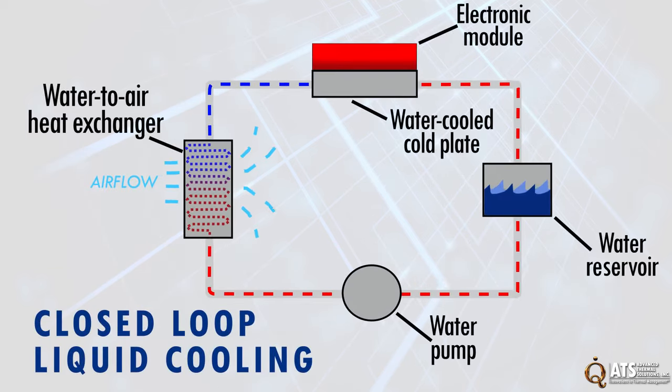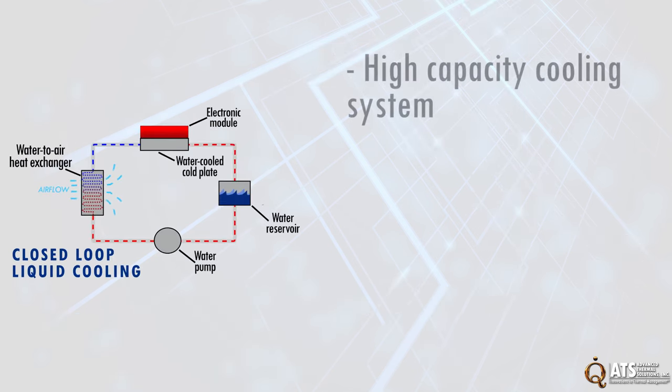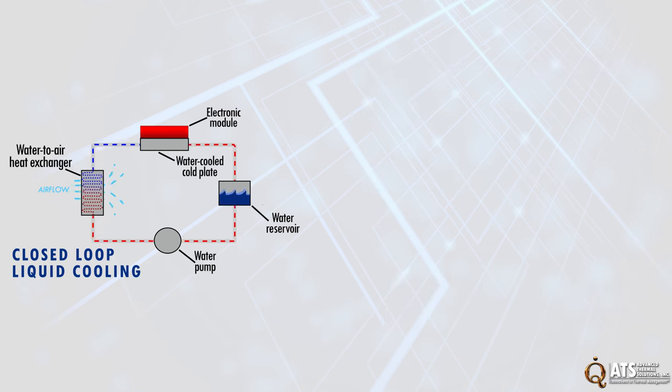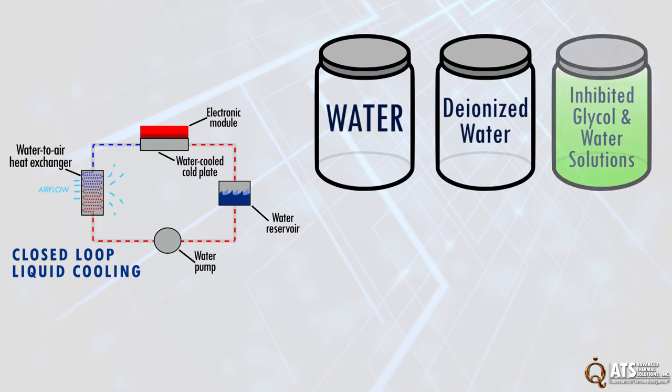A heat exchanger used for cooling components features a water-to-air liquid-cooled closed-loop system. Closed-loop liquid cooling is defined as a high capacity, high maintenance cooling system that uses liquid as the coolant and a heat exchanger for heat removal. The most commonly used coolants are water, deionized water, inhibited glycol and water solutions, dielectric fluids, and custom-designed heat transfer fluids.